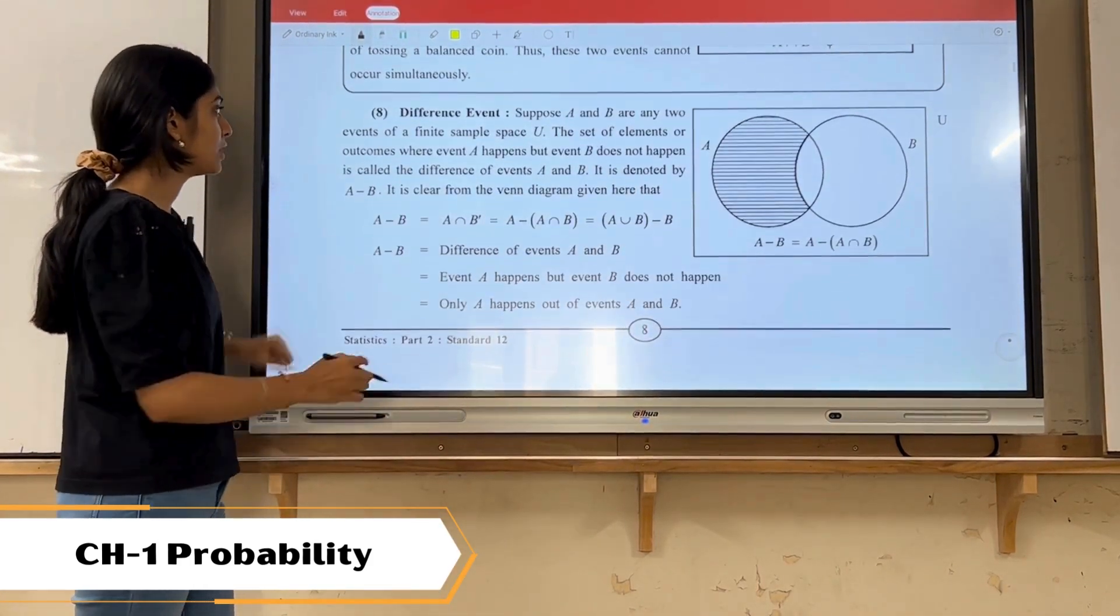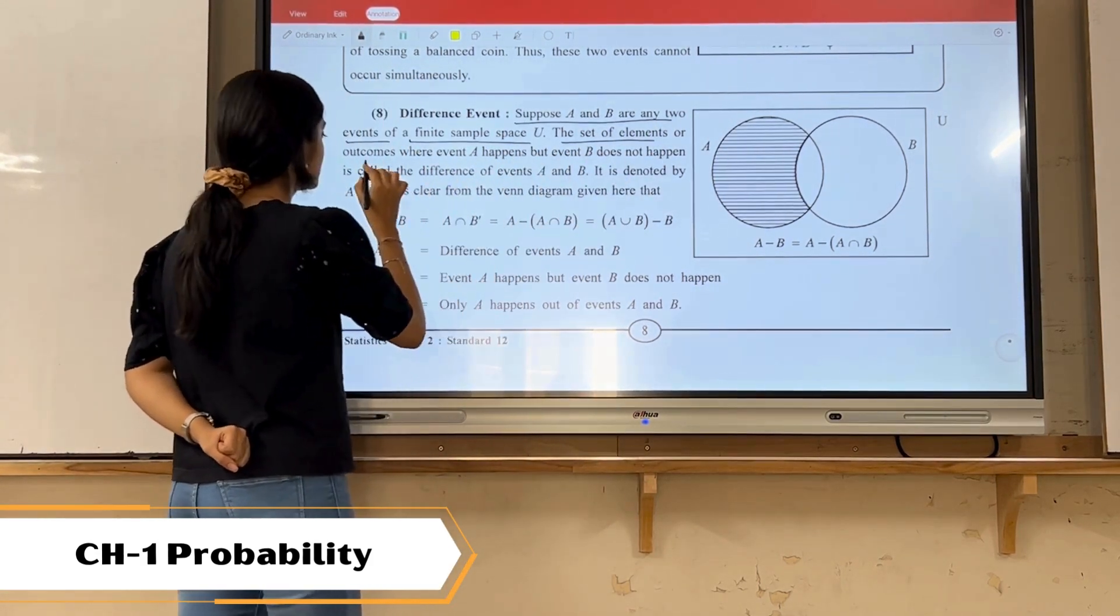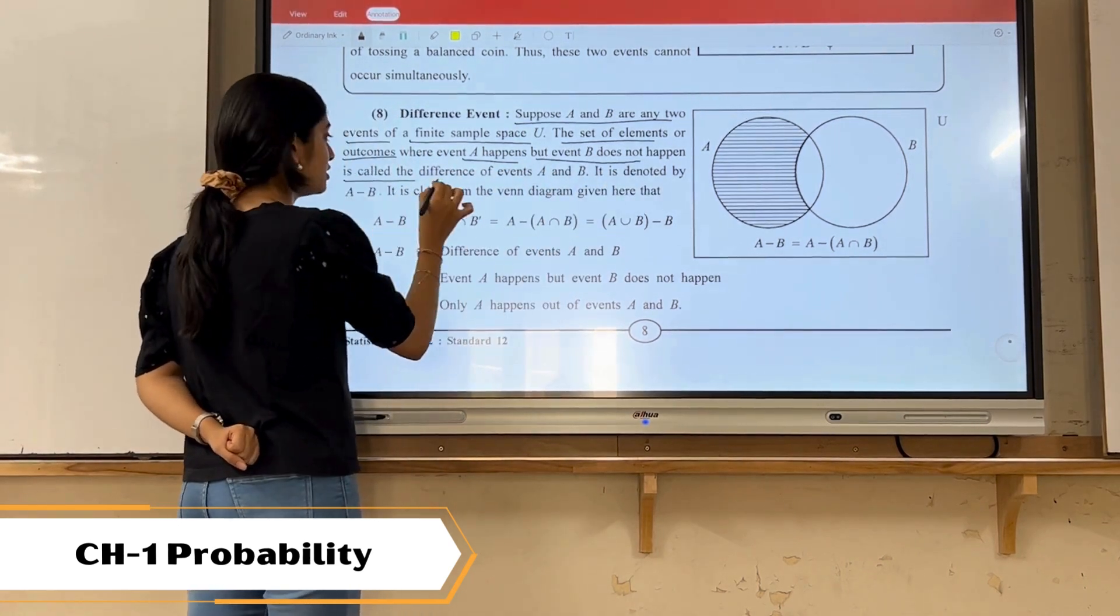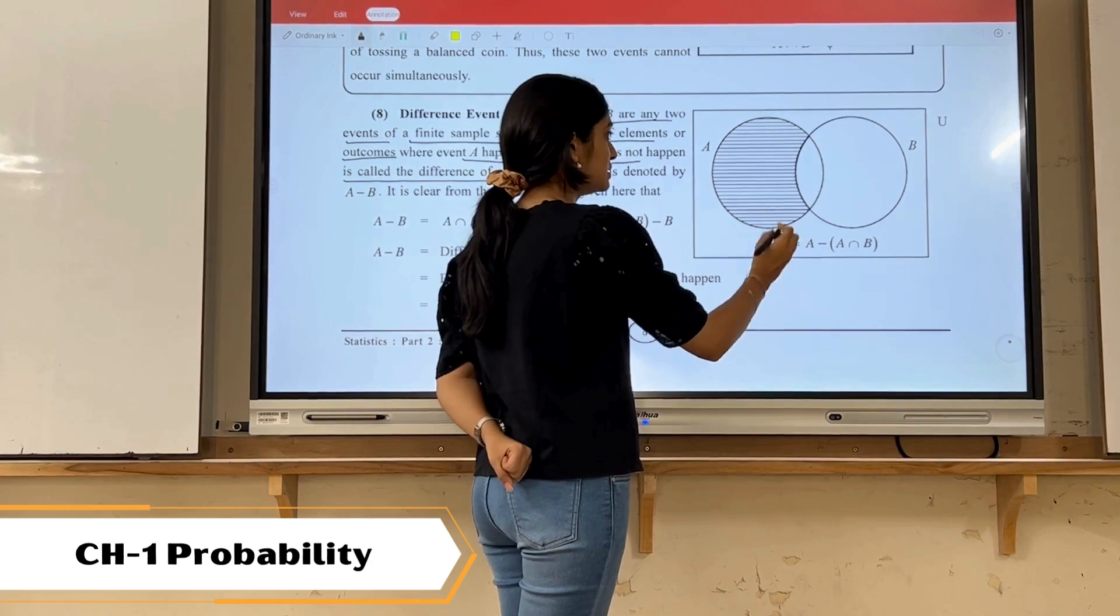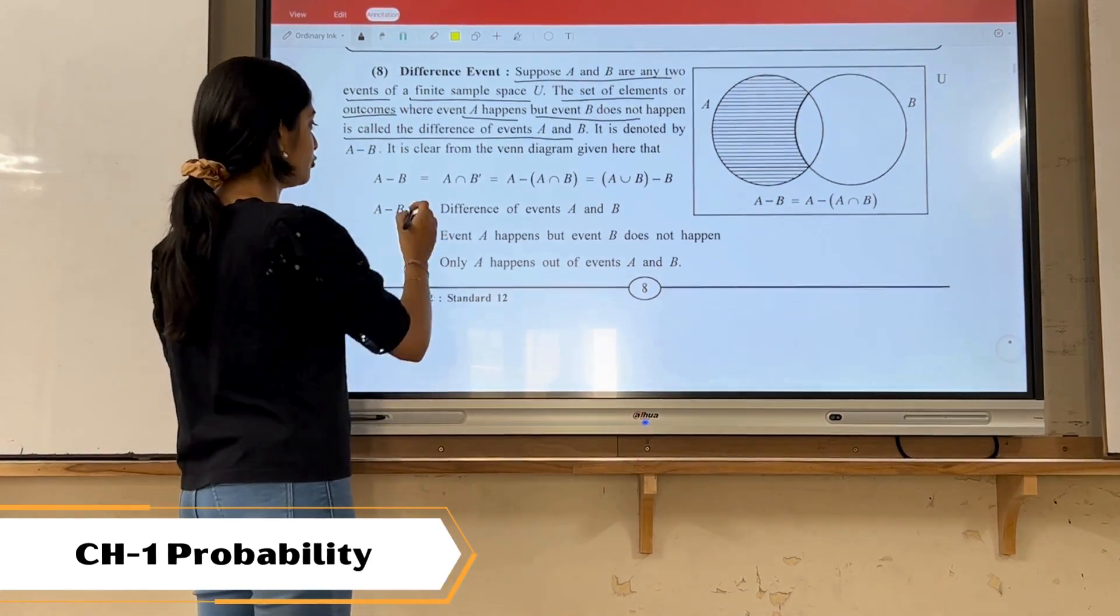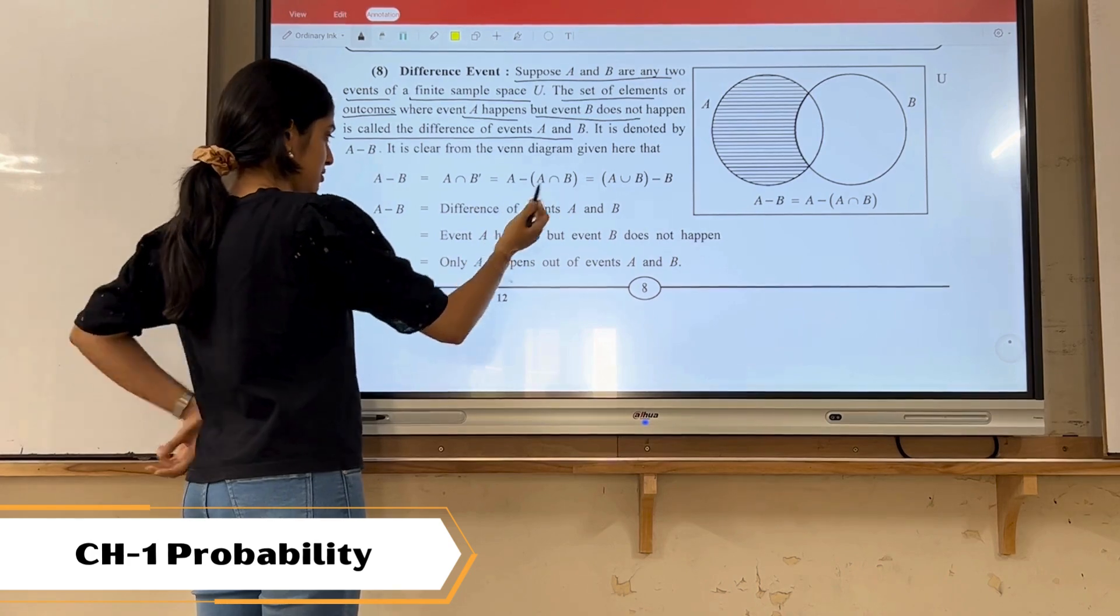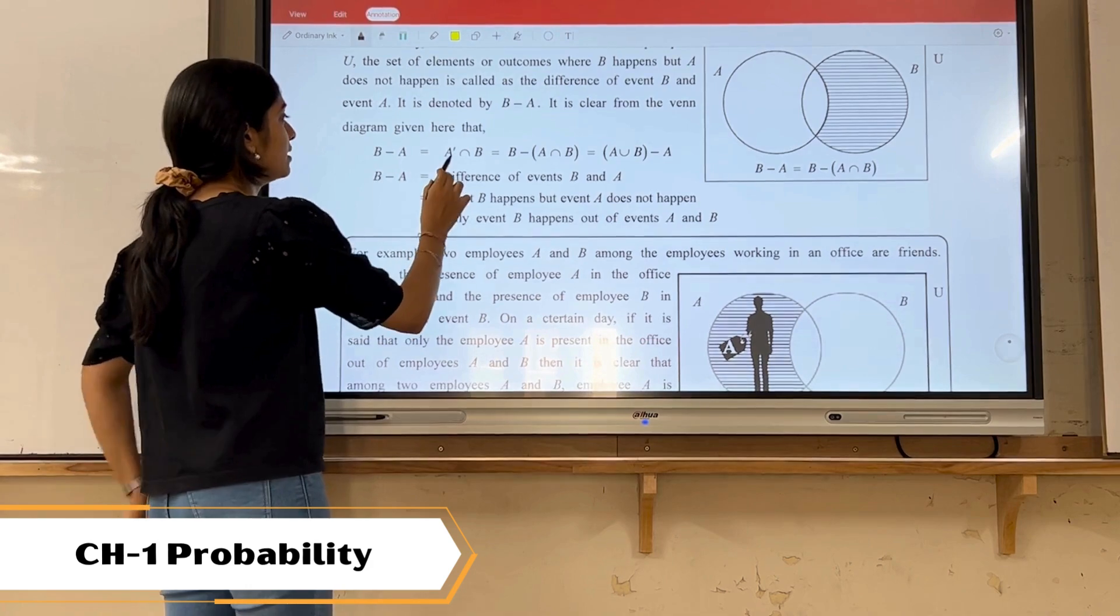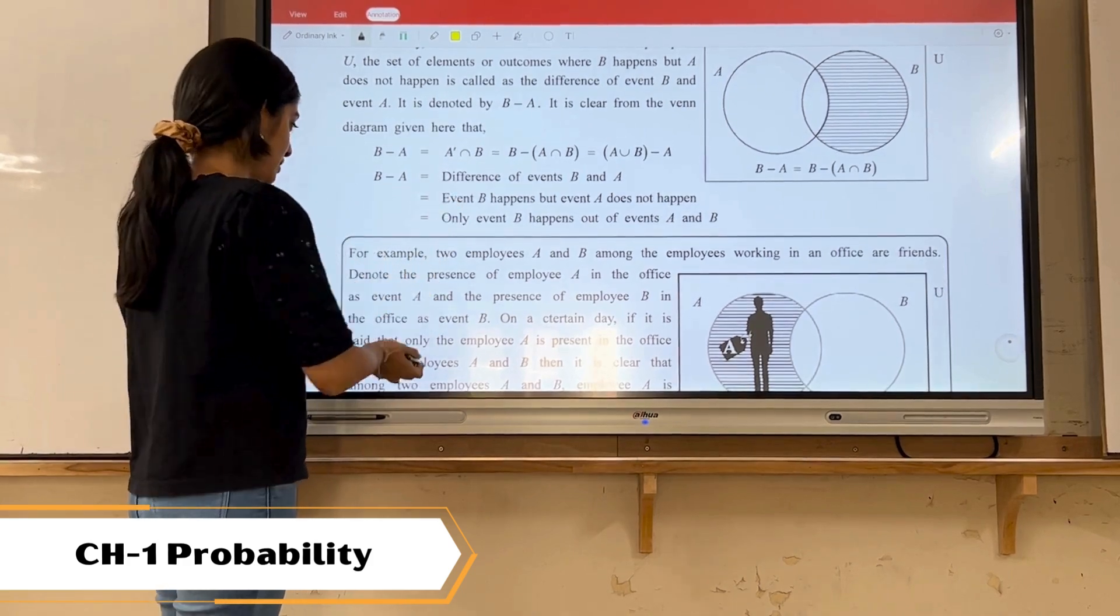Next is difference event. Suppose A and B are any two events of finite sample space U. Then set of elements or outcomes where event A happens but event B doesn't happen is called difference event of A and B. Here it is denoted by A minus B, that means event A is occurring but event B is not occurring. The formula is A intersection B dash, which is A minus A intersection B. Same way for B minus A, formula is A dash intersection B, that is B minus A intersection B. This is important for your two marker and three marker sums.